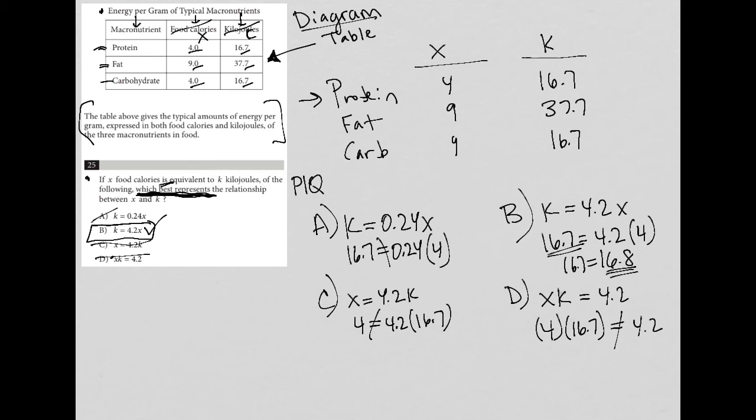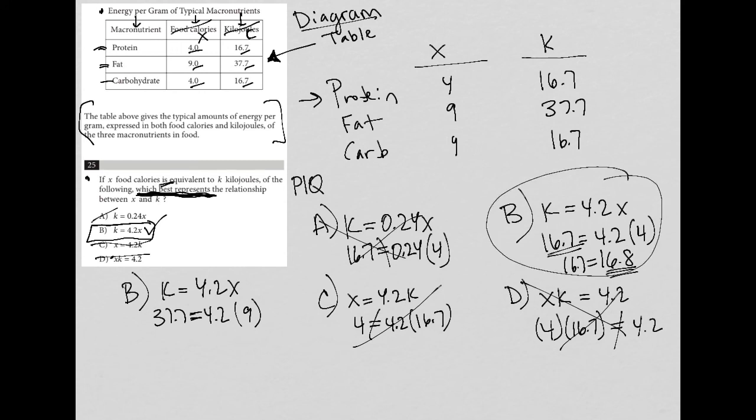If you're asking, why did you only use protein? Could you have used fat or carbs? Really, it should work for all of them. If you want to be extra certain, we could go back to choice B. What happens when we use fat? K equals 4.2 times X. For fat, the K value is 37.7. Is it true that 37.7 equals 4.2 times 9? You will see that is not exactly correct, but very close to the right answer. That would be using protein getting us very close, as well as using fat. Carbs would also help. That would let us know that choice B is the best answer.